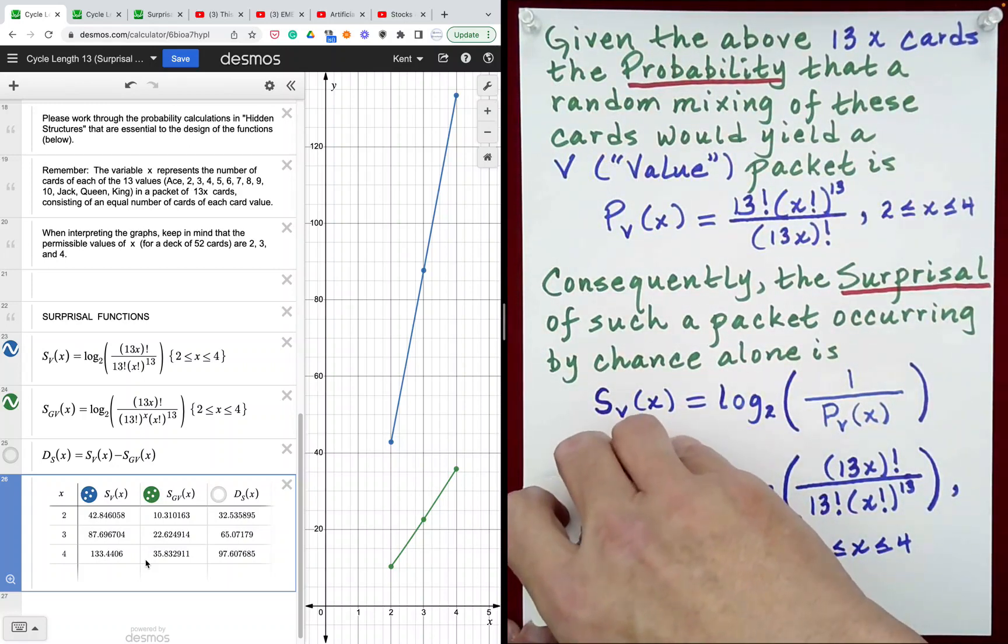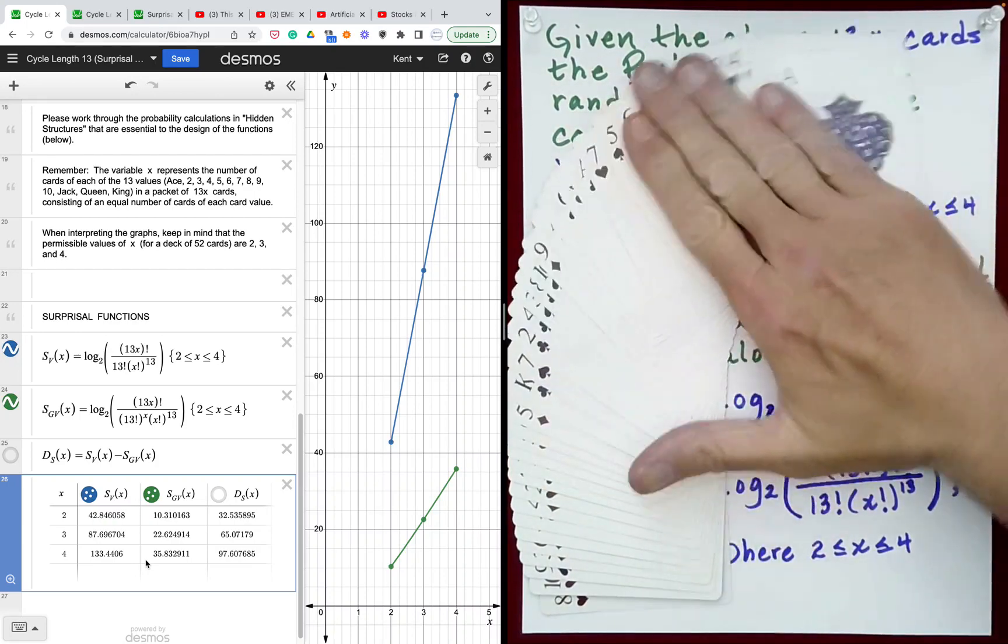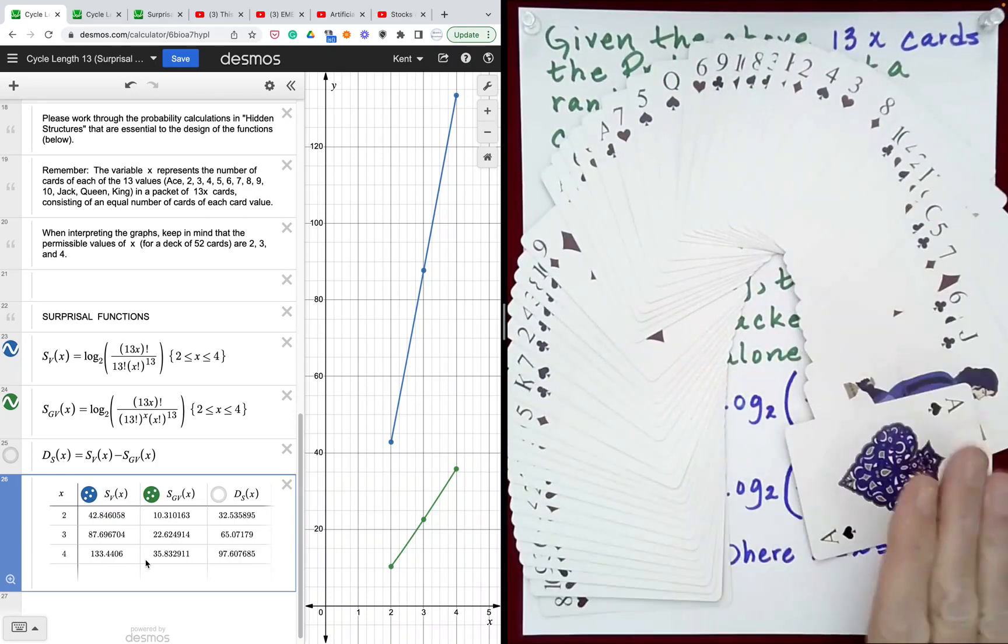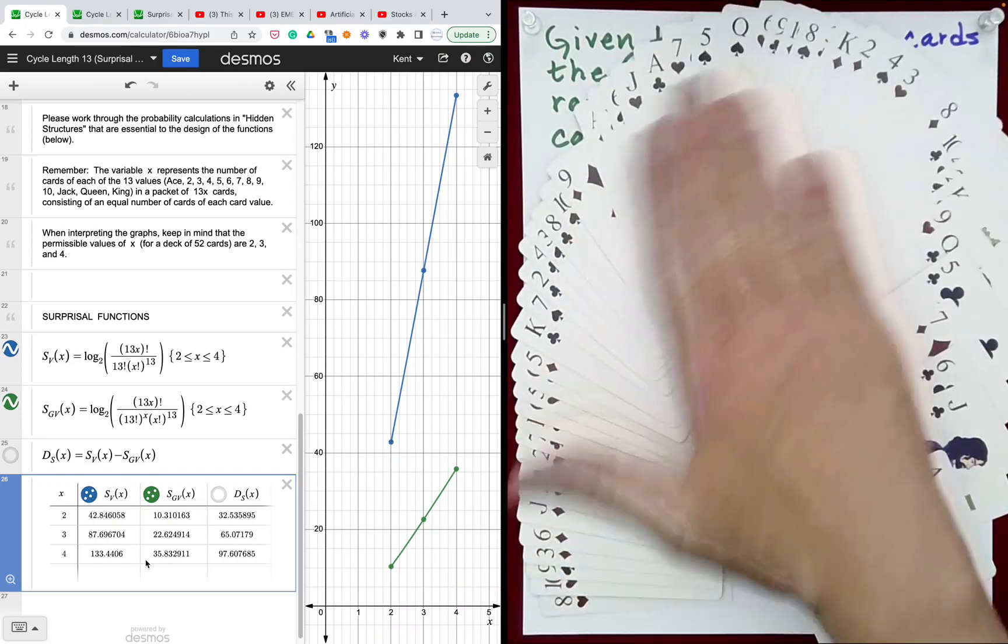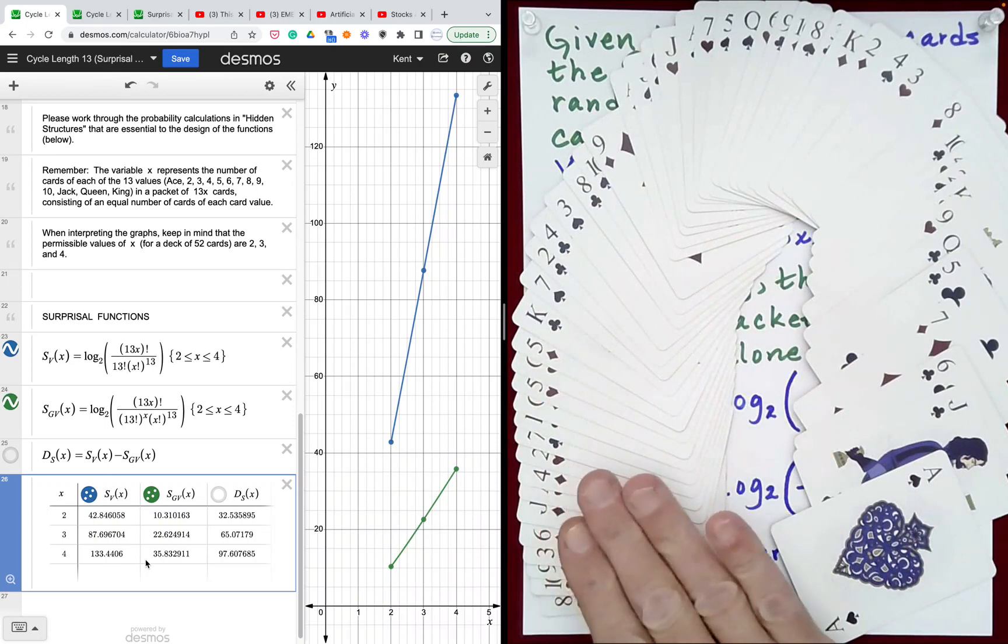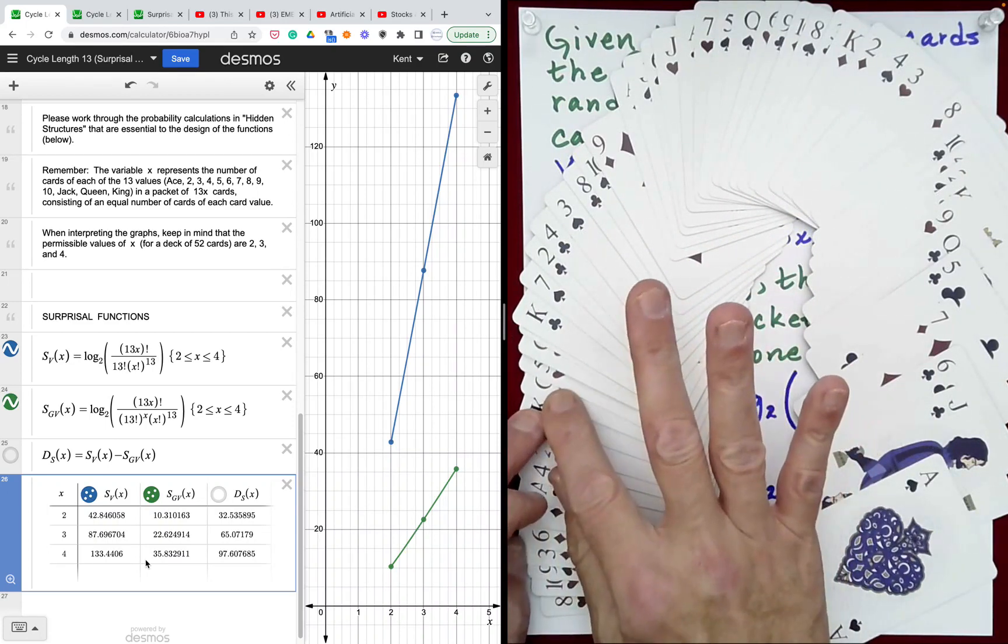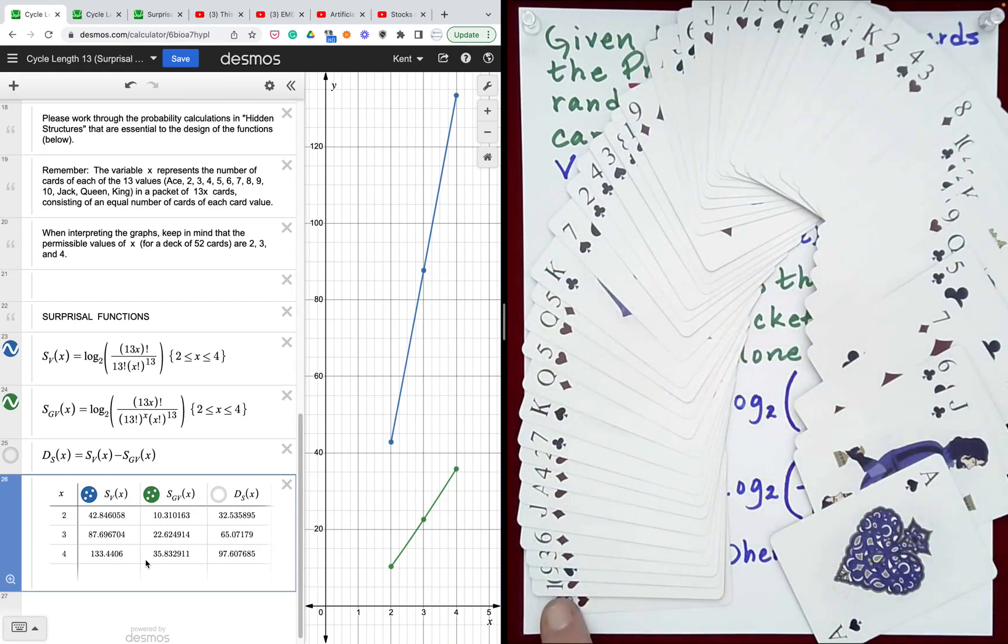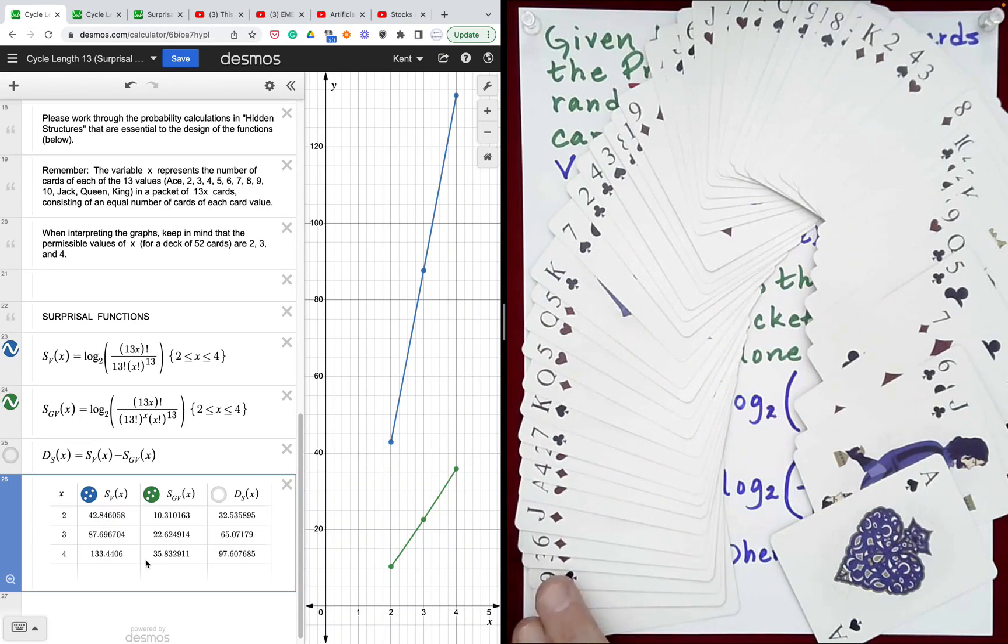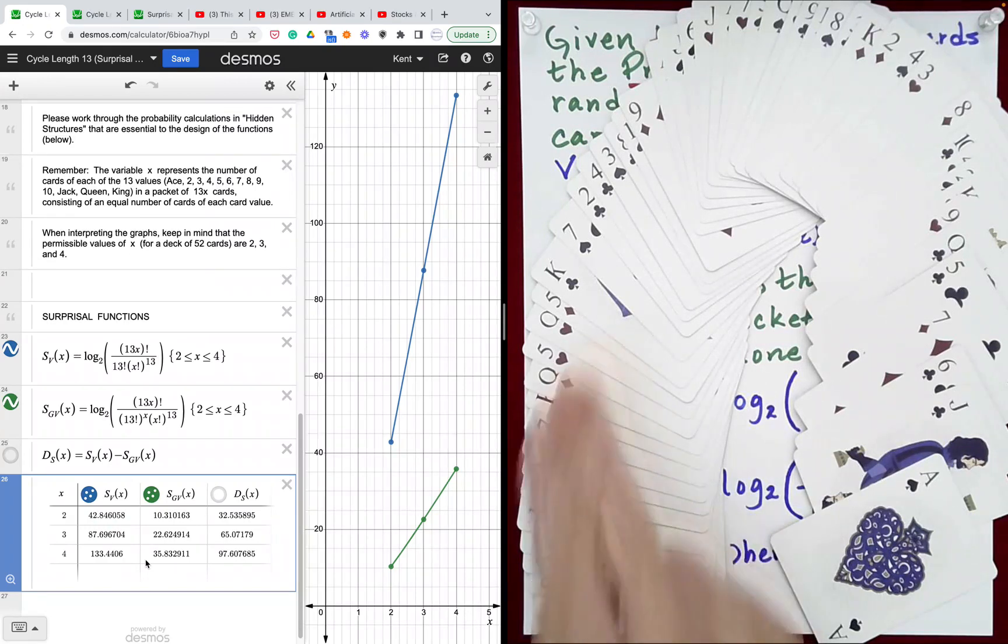We could have done a Riffle Shuffle as well, but we did a Rosette Shuffle in which no one was controlling how those cards were being interlaced. Let's take a look at the structure of this deck now. This has, quote, 35 bits of surprisal associated with it, the structure that we're going to see right now. What is the structure the deck has after that shuffle? Well, it has the following structure. Every set of 13 cards, starting from the top of the deck, consists of exactly one card of each of the 13 card values.